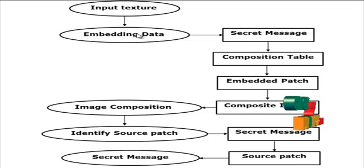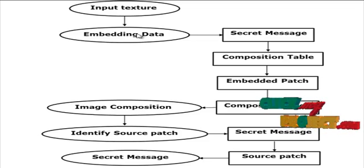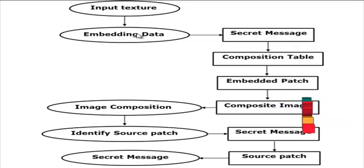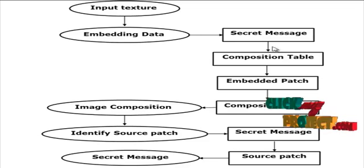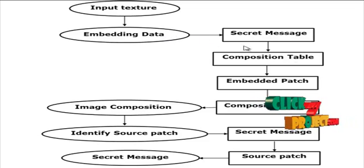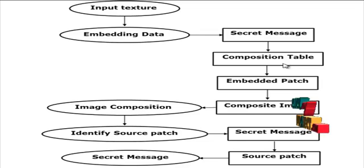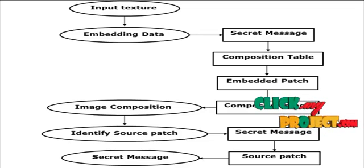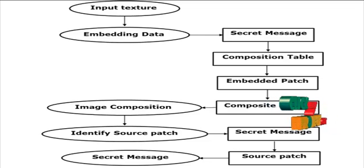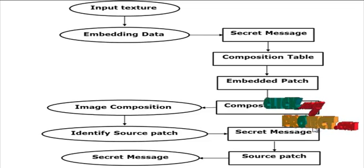Finally, the inverse Discrete Cosine Transformation is applied to the obtained image and it is used for the next step. After hiding the secret message in the image, a composition table is created — specifically a test index table. The obtained source patches are placed in the image matrix with the help of the index table, which acts as a key for image composition.